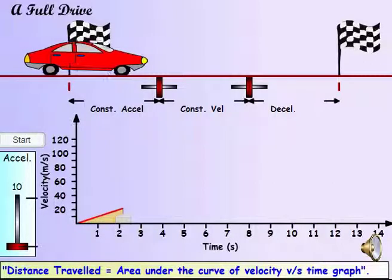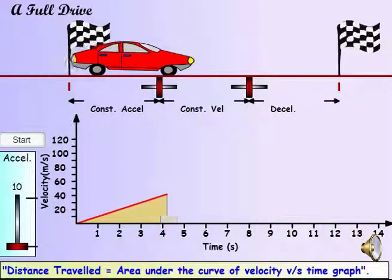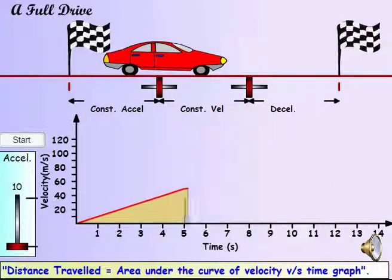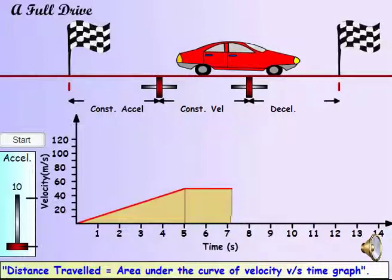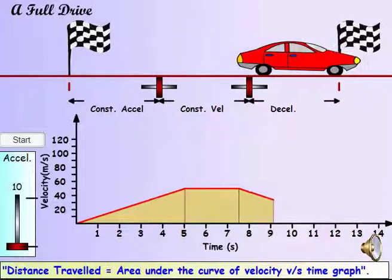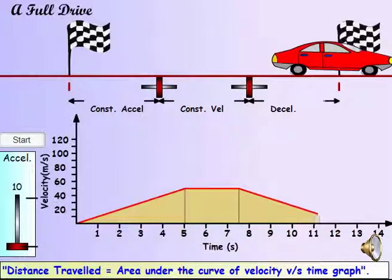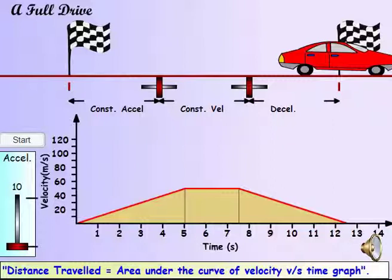This graph shows a complete drive with acceleration, uniform velocity, and deceleration. When the car accelerates, the graph rises. When the velocity is constant and acceleration is zero, the graph stays flat. And when the car decelerates, the graph falls. Measuring the area under the graph gives you the distance traveled.